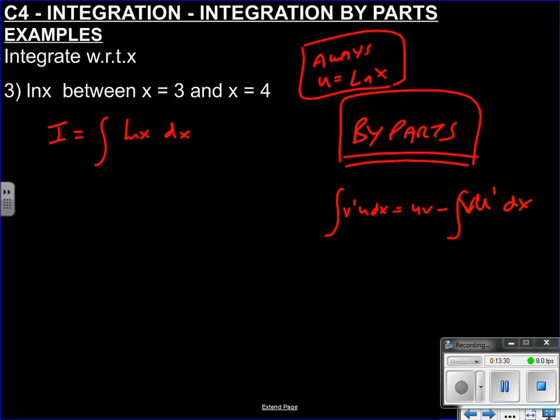So where's the product then? Which one's u and which one's v? If I'm saying this always has to be u, where's v? Well, v dash must be this silent one. The secret one next to ln. Because it's one times ln. So if we make u ln and differentiate it, that's one over x. You see, it's broken down to something. V dash is one. And v integrates just to x. So now we can use our formula.